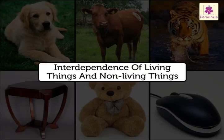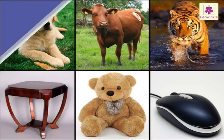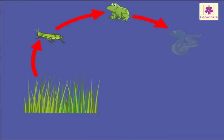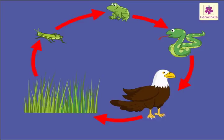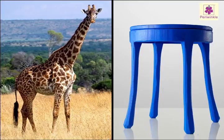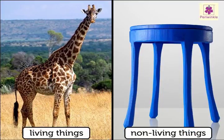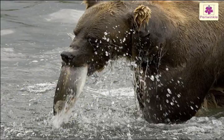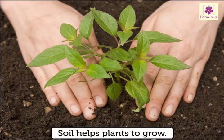Interdependence of living things and non-living things. All life on this planet is interconnected in delicate balances called ecosystems. Living and non-living things depend on each other. There is a relationship of give and take. For example, soil helps plants to grow.